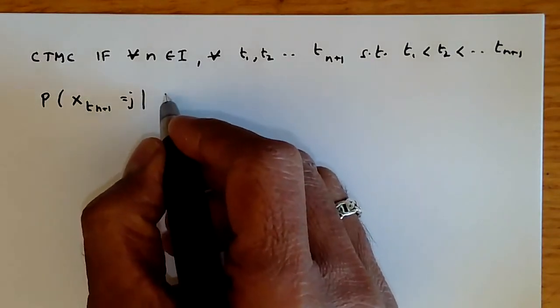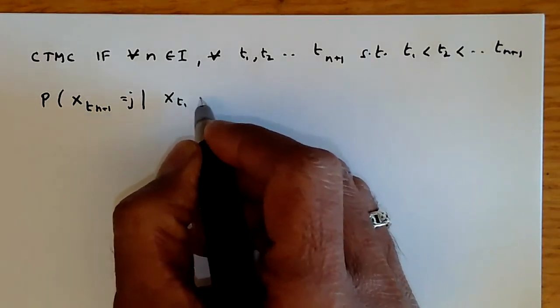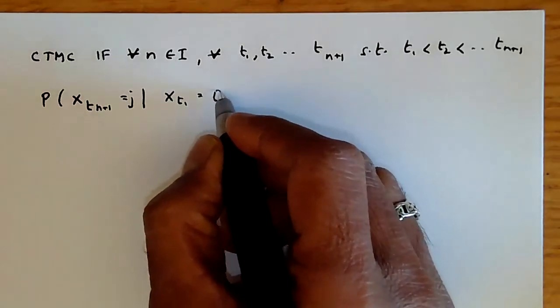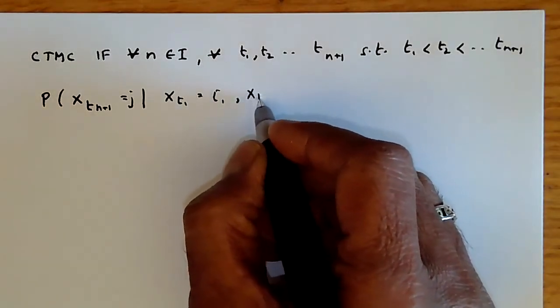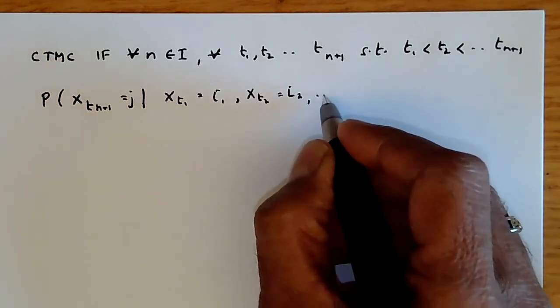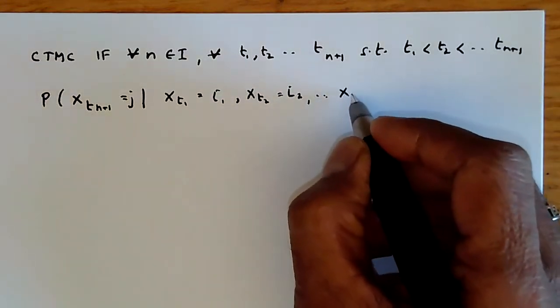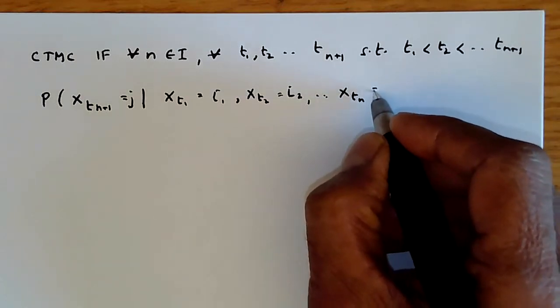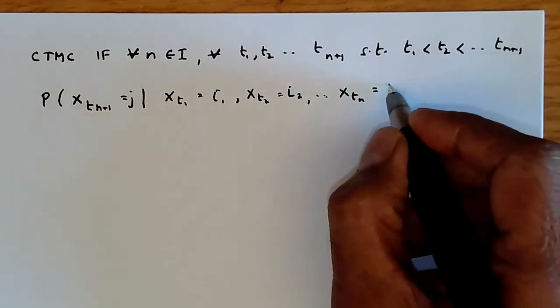given that X_{T1} equals i_1, that's the first state, X_{T2} equals i_2, the second state, et cetera, and X_{Tn} equals i_n,